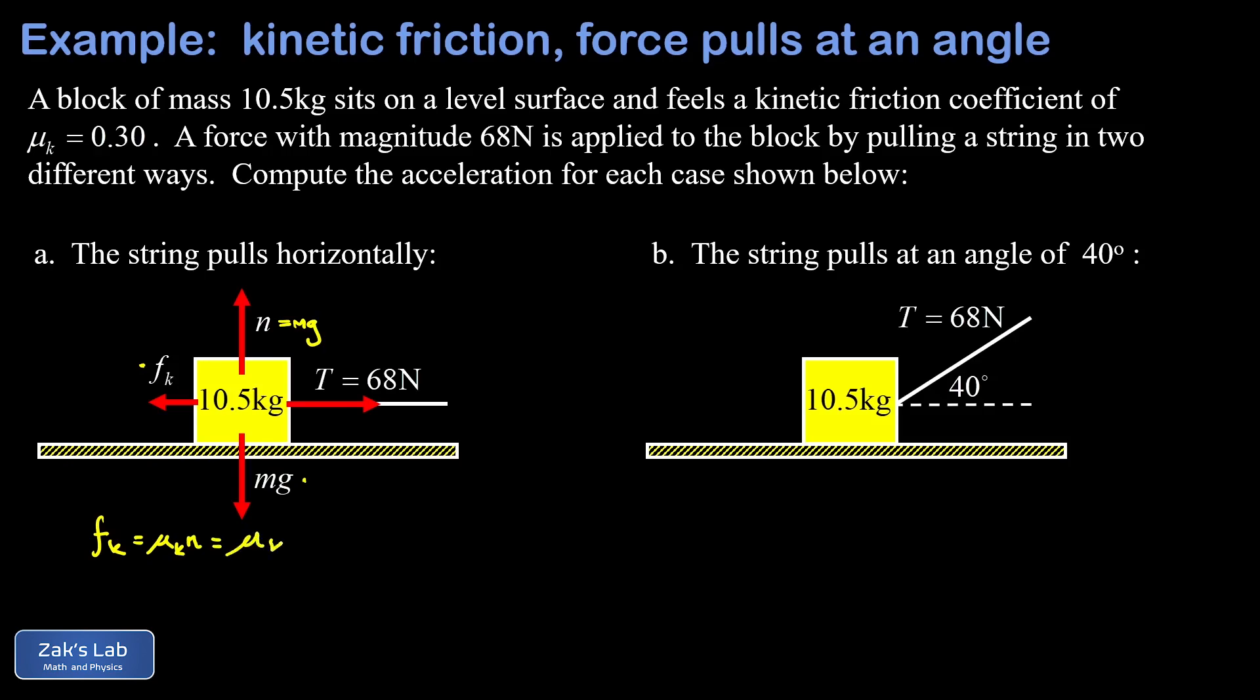Now we could go ahead and get a number on the kinetic friction force. We were told in the problem that the kinetic friction coefficient is 0.3, so I have 0.3 times the mass of the block, 10.5 kilograms, times 9.8 meters per second squared. This gives us about 30.9 newtons.